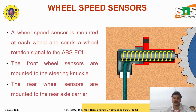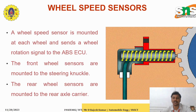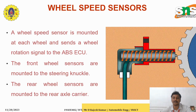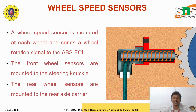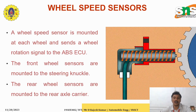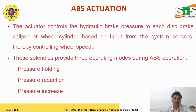The wheel speed sensor works as follows: the wheels have a tooth structure, and when the teeth come into contact with the tip of the sensor, it generates a pulse. Based on this pulse, the ECU determines whether the wheel is in motion or stationary. This is how the wheel speed sensor functions — it is a Hall effect sensor.